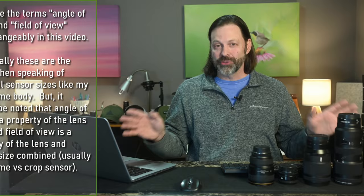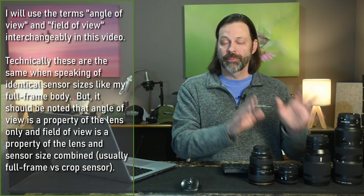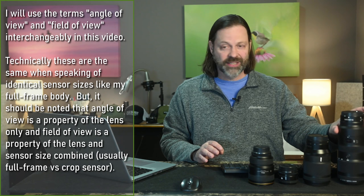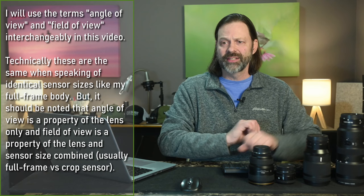Before we can talk about wide-angle photography we actually have to understand focal length and what it means and how it relates to the angle of view. These are a couple of terms you'll hear a lot in this video. I've brought some lenses out — a 200 millimeter lens, a 100 millimeter, and a 50 millimeter lens. I'll talk about this lens in just a minute.